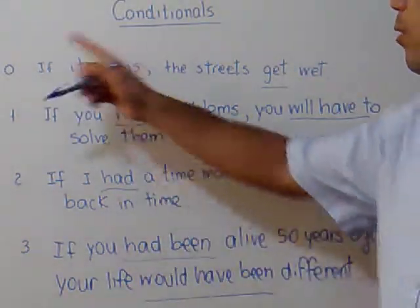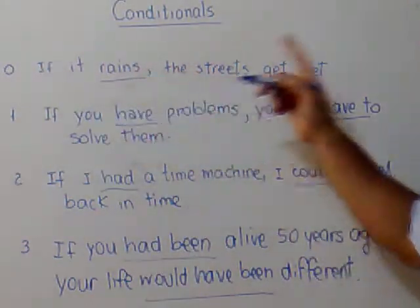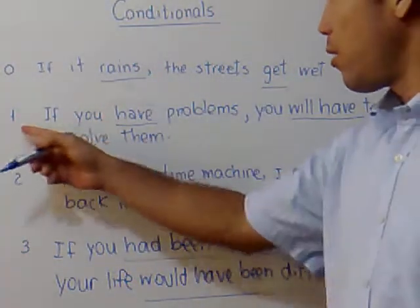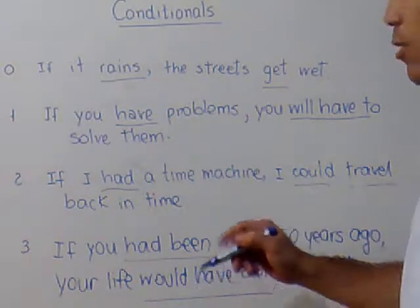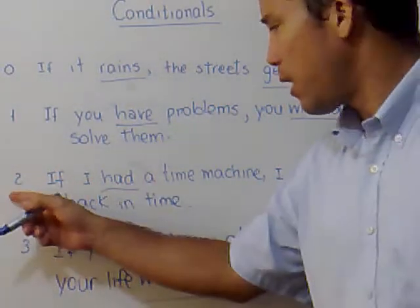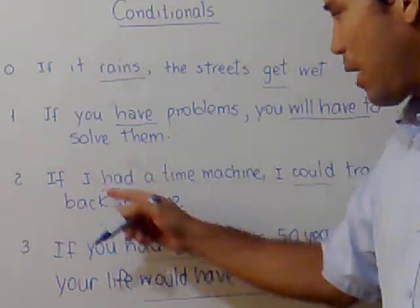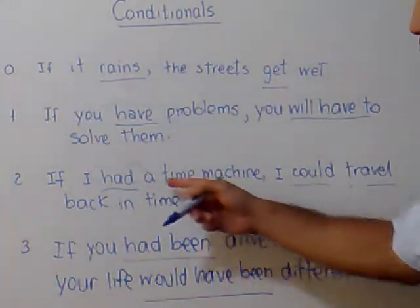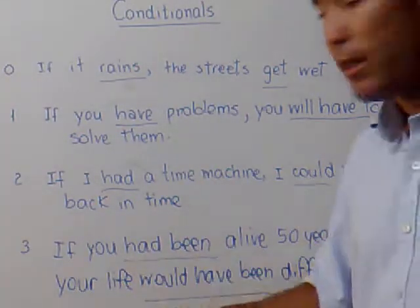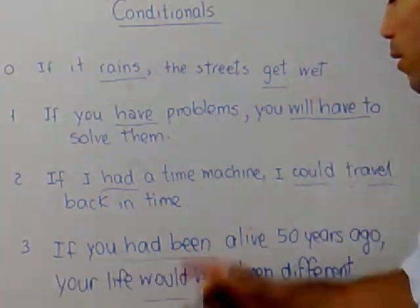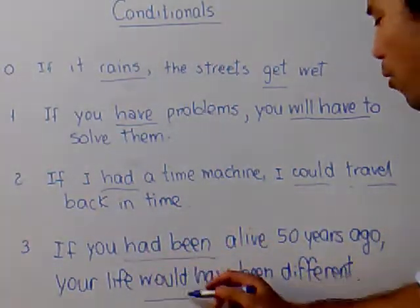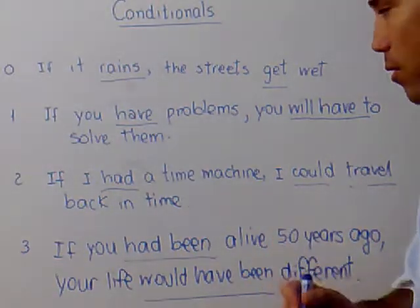So one more time: conditional zero — I use present in the condition clause and present in the consequence clause. First conditional — I use present in the condition clause and future in the consequence clause. Second conditional — I use past in the condition clause and modal plus present in the consequence clause. And finally, the third conditional — I use the past perfect in the condition clause and modal plus present perfect in the consequence clause.